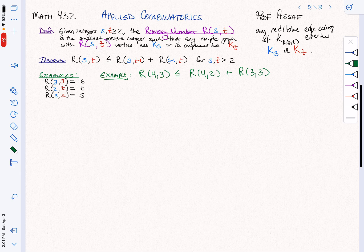So R(4,2) is going to be 4 plus R(3,3), which we computed, that's plus 6, and that's going to equal 10. So we know that R(4,3) is at most 10.